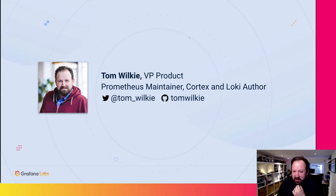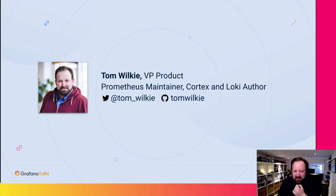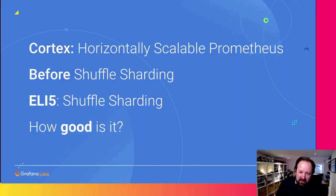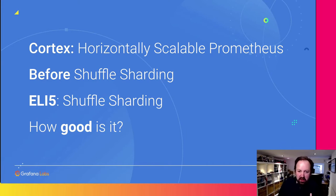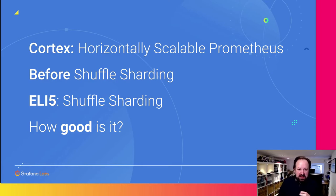When I'm not looking after these projects, I have a bunch of 3D printers sitting on my desk and I used to make beer as well, but I haven't actually had a chance to brew for a while. Today we're going to talk about Shuffle Sharding and how it allows us to build a more scalable version of Cortex with better isolation. But before we do that, I'd like to spend some time introducing you to Cortex — what it does, what it is, why it's important.